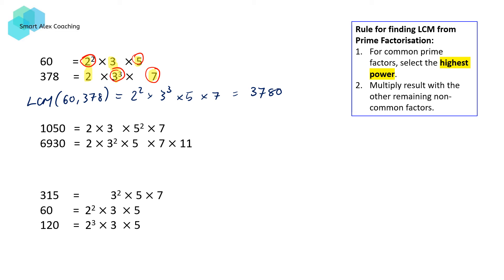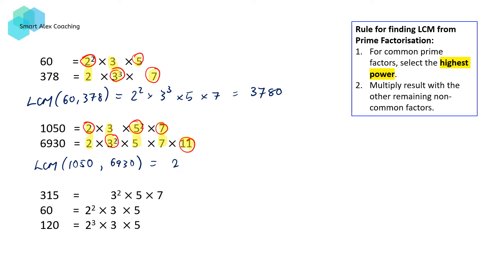For our second set, we've got 1050 and 6930. Again, we're going to identify the common prime factors, which are 2, 3, 5, and 7. Then we select the one with the highest power. 2 and 2 have the same power, so it doesn't matter — we can choose any one. 3 squared has the higher power over 3. 5 squared has the higher power over 5. 7 and 7 are the same, so just select one. We also have to take 11 as well. So the LCM of 1050 and 6930 is given by 2 times 3 squared times 5 squared times 7 times 11, which when we put into the calculator, we get 34,650.